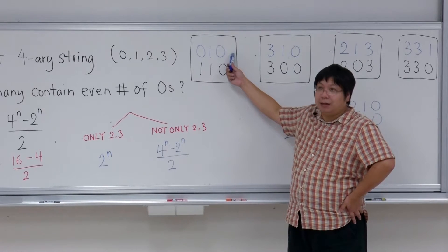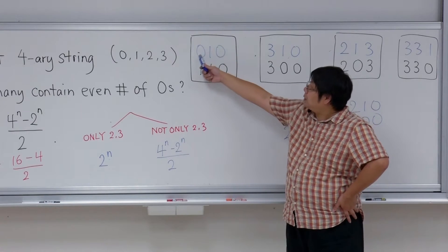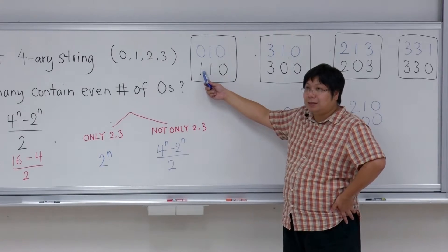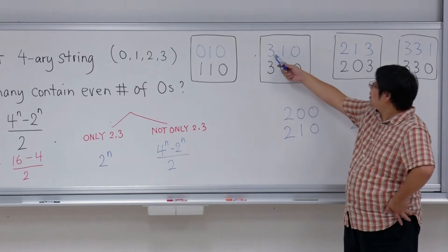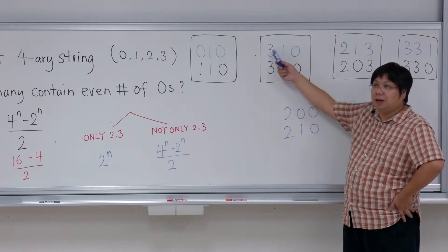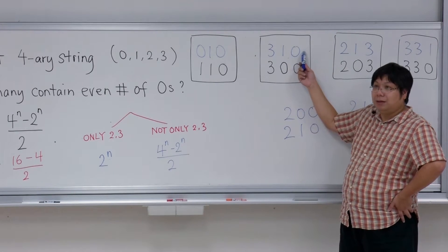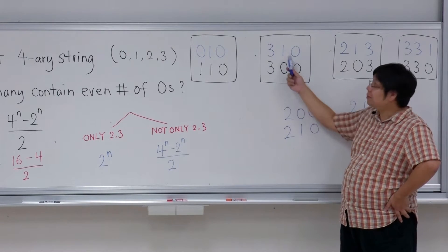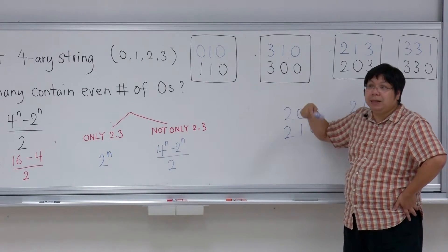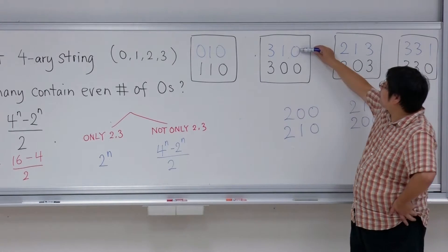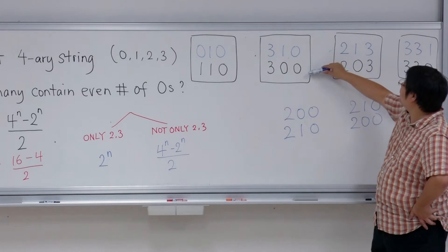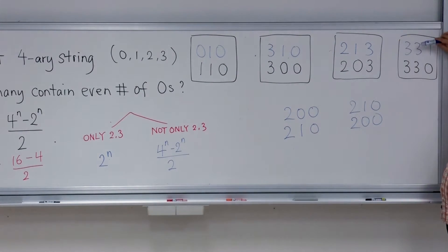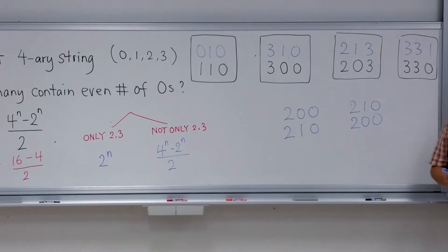For example, 0-1-0 has even number of zeros. We scan and find the zero, change it to one — suddenly it becomes odd. Or a string with odd zeros: by doing this operation we increase the number of zeros by one, going from odd to even. So in each pair, one is even and one is odd.